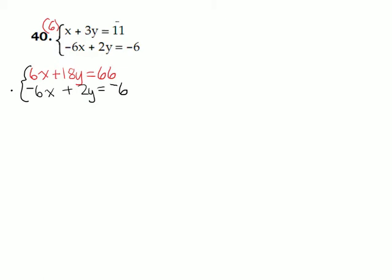Now, let's add those two equations together. 6x plus negative 6x is zero, so that's gone. 18y plus 2y is 20y, and 66 plus negative 6 is positive 60. Then when we divide both sides of the equation by 20, we're going to find out that the y coordinate of the point where these two lines intersect is 3, so y is 3.